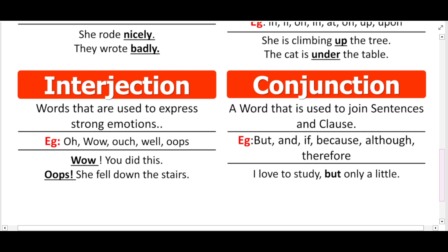Now let's move to interjection. These are words used to express strong emotions. For example, when there is happy news we say 'hurrah!' or 'wow!' These are expressions that show your feelings — a word that comes straight from the heart. For example, if someone falls down the stairs — 'oops!' or 'ah!' These words are called interjections. Examples include: oh, wow, ouch, well, oops, ah, yeah, hurrah.